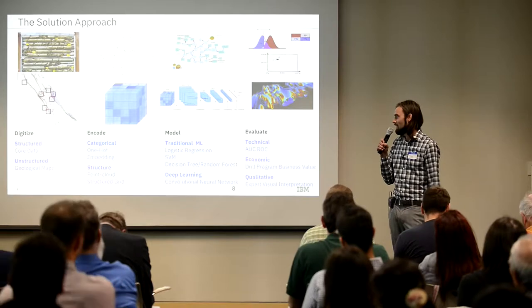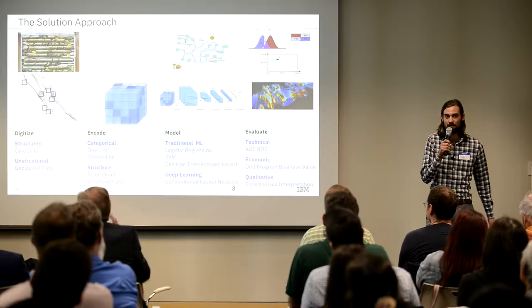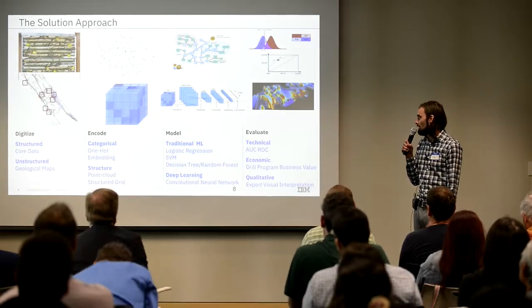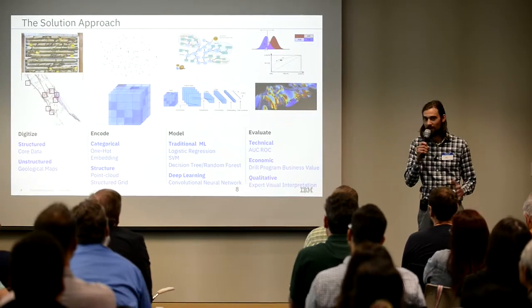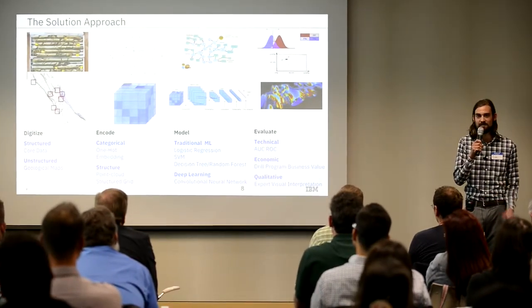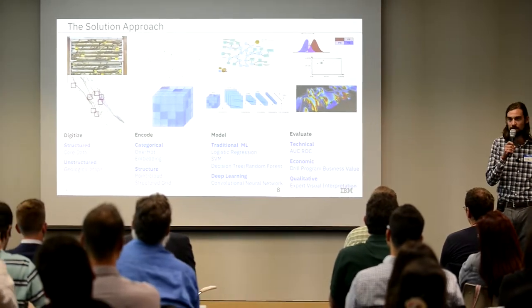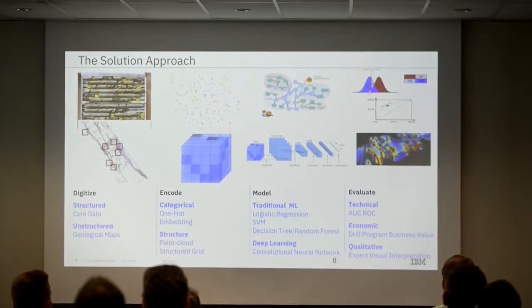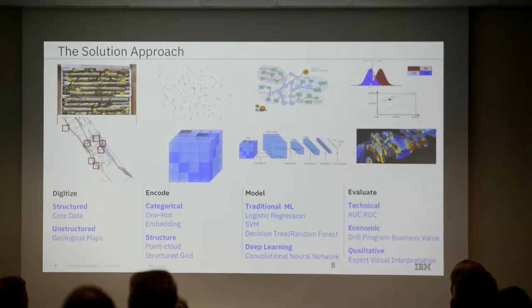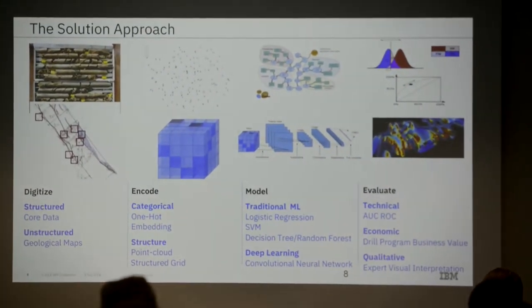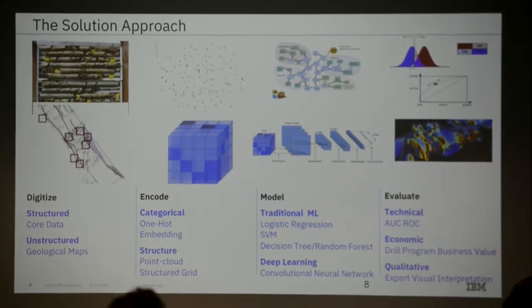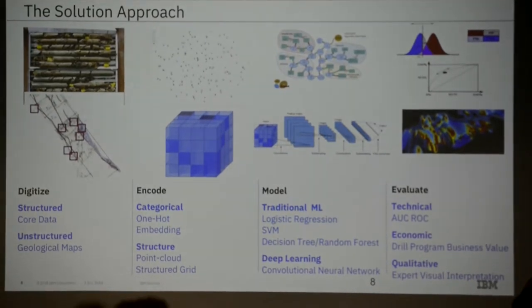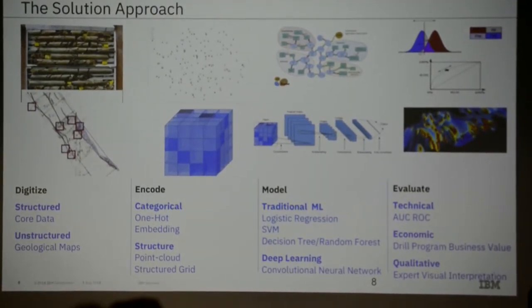This is a really busy slide — it captures the entire pipeline for the predictive modeling portion of the platform that Omolade introduced. The four main steps are: digitize, identify and analyze the different datasets available; encode that in a way that machines can understand and that predictive modeling algorithms can learn from; apply those different algorithms; and then evaluate how well we're actually performing. The first part — digitize — is probably the bulk of the effort in this project.